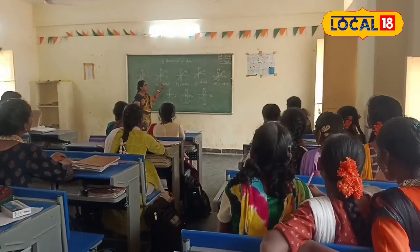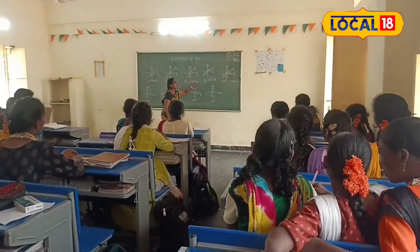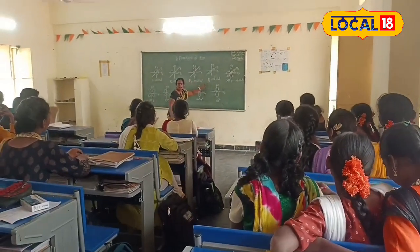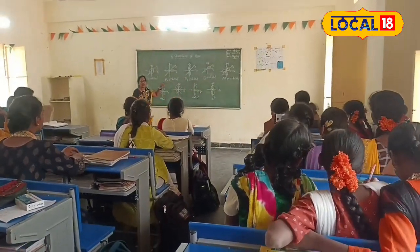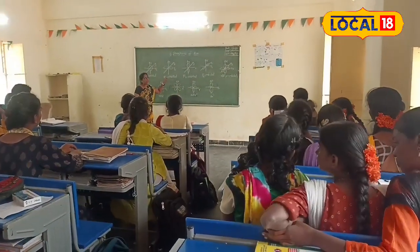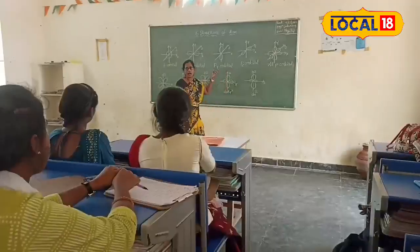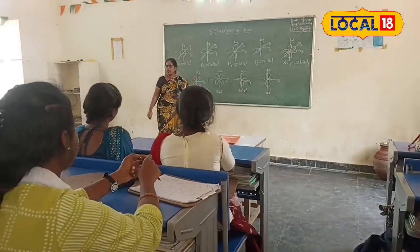These three are the diagrams of the P orbitals. Here we have three orbitals, and this is the shape of the P orbitals.